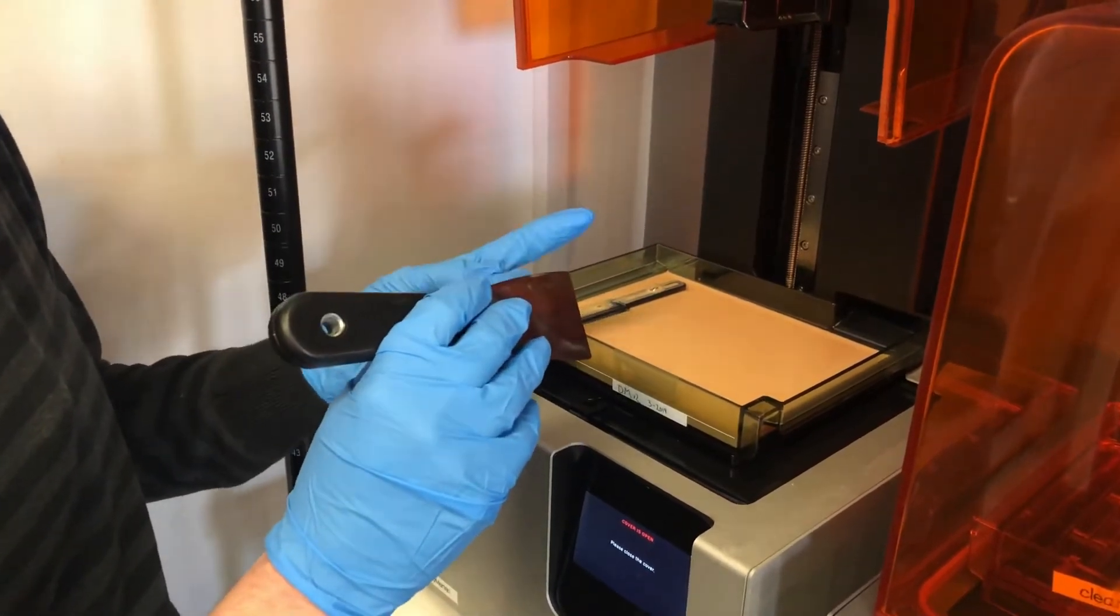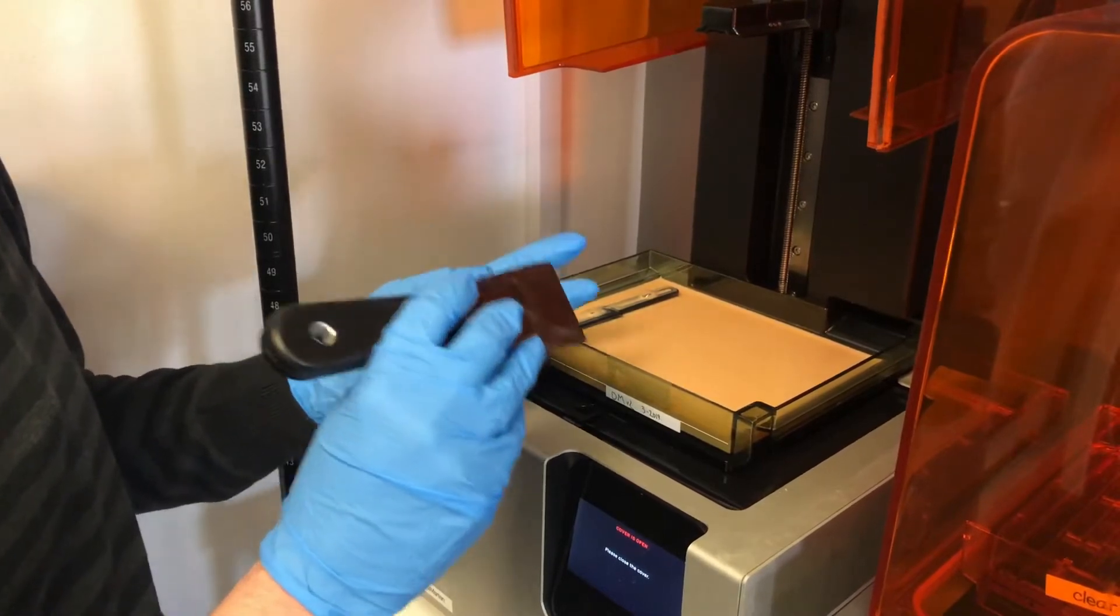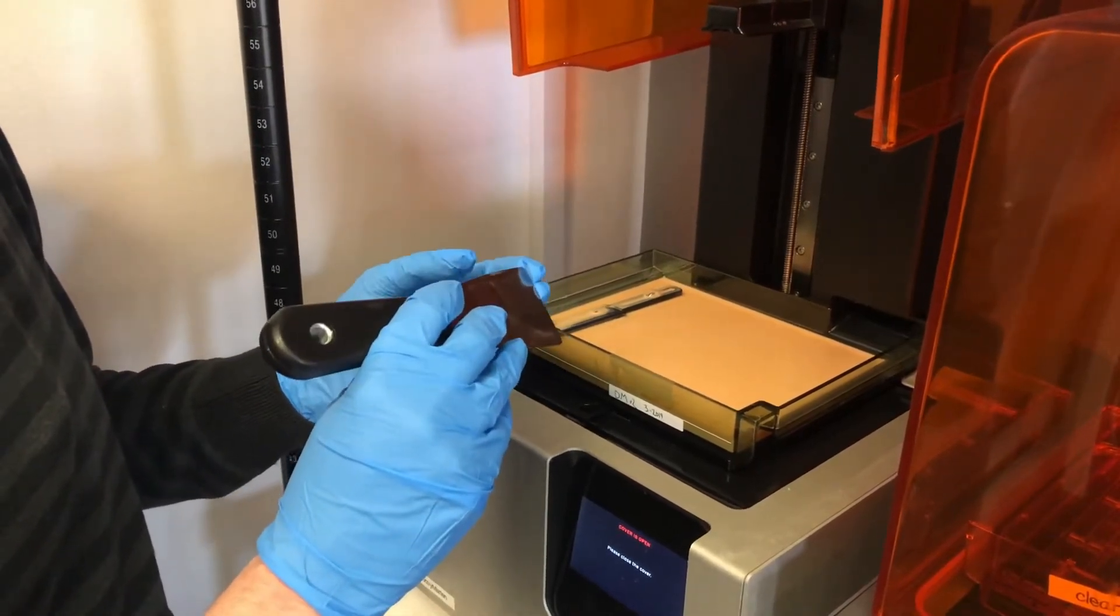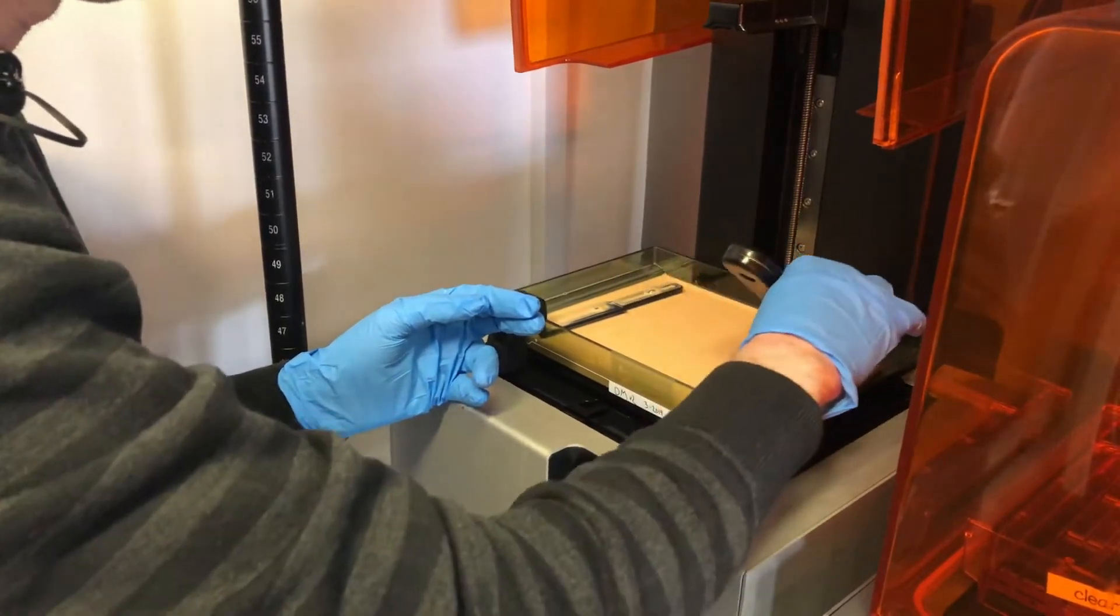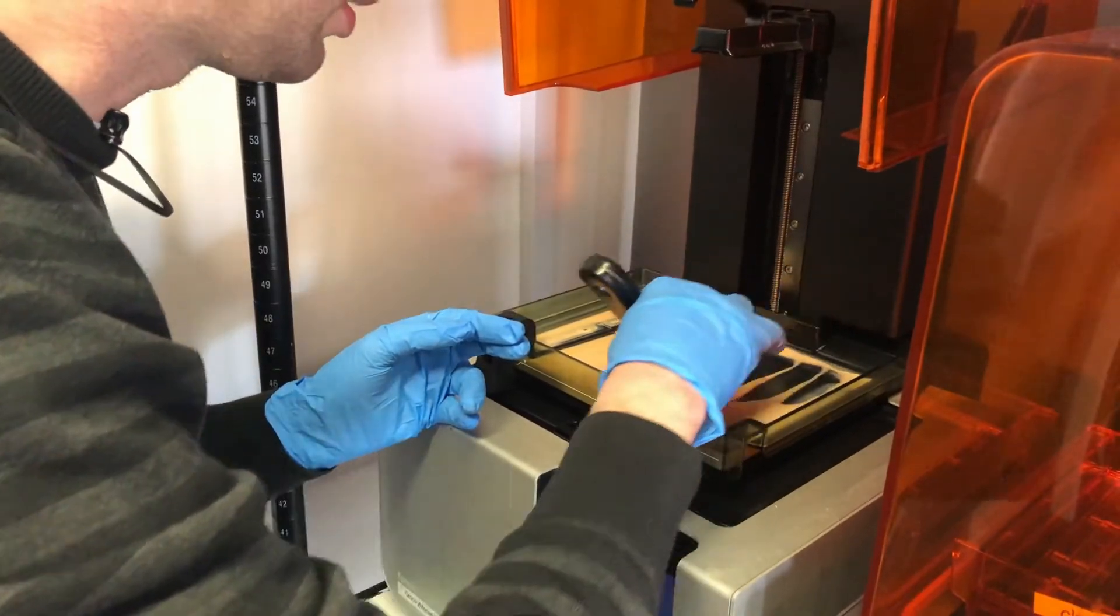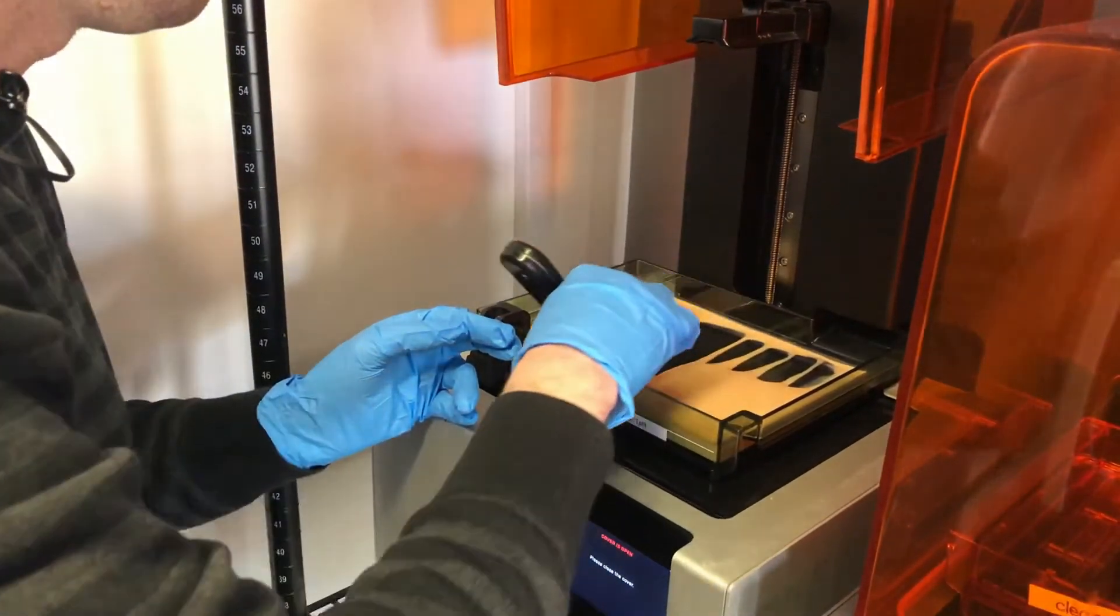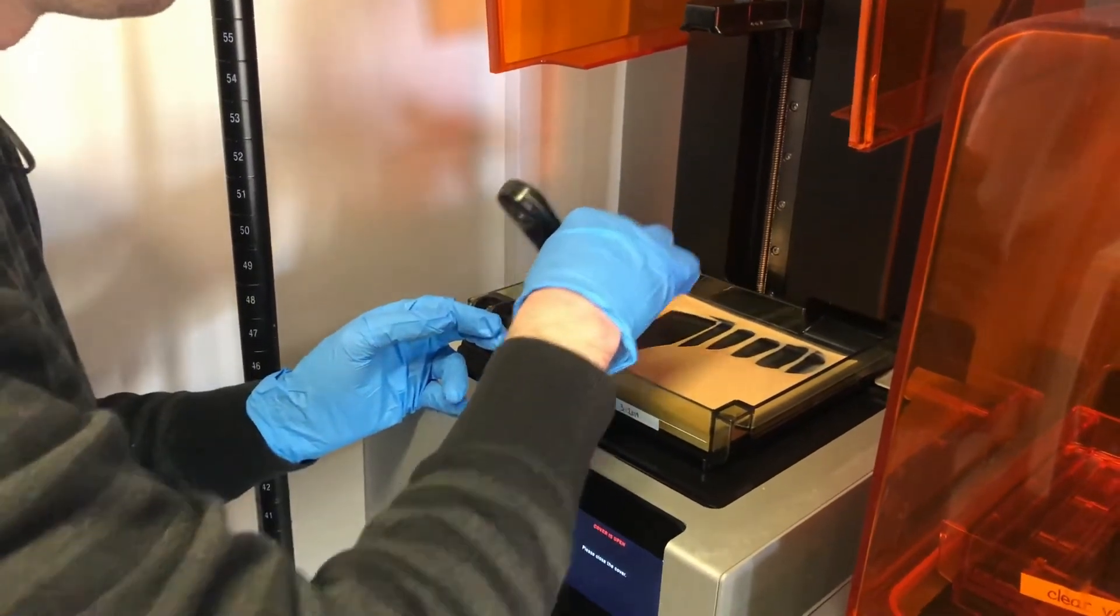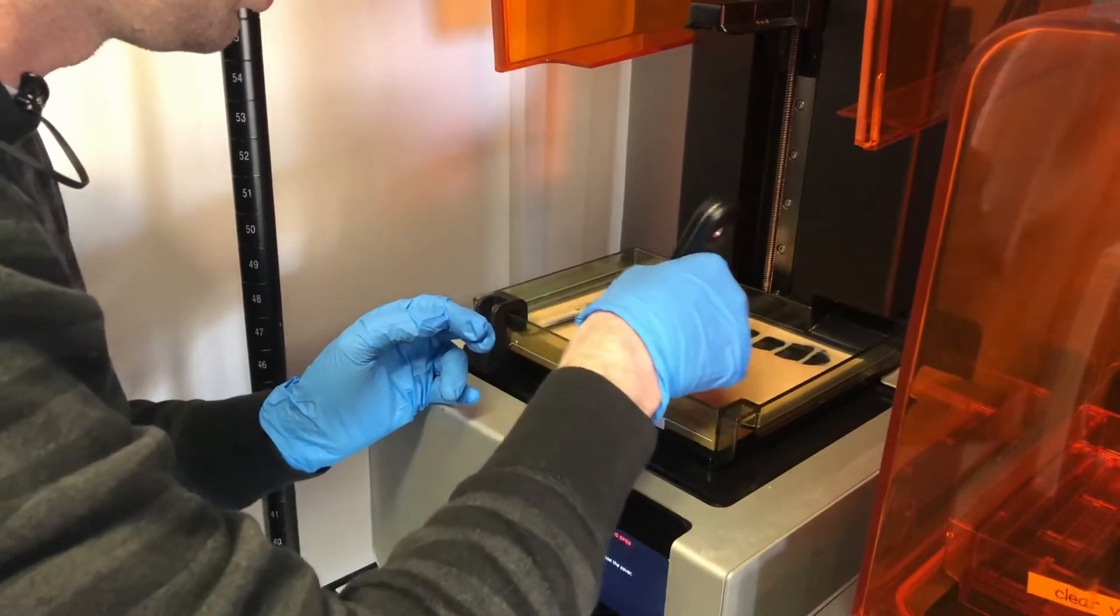What I'm about to do will do two things: one is it mixes the resin, and two is you can check the health of the resin tank itself. So I actually like a 45-degree angle scrape across the entire resin tank. As I'm doing that, I'm feeling for cuts, anything, any debris floating around. For example, this resin tank looks really good.